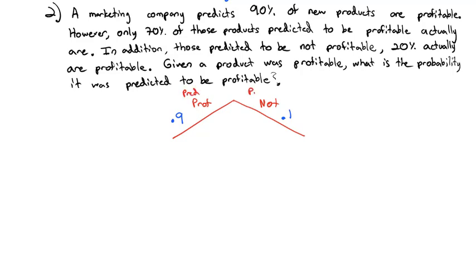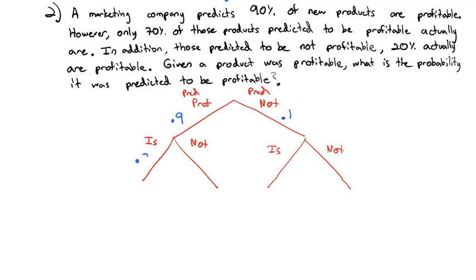The next branch looks at whether the product actually is profitable or not. Of those predicted to be profitable, 70% actually are and 30% are not. Of those predicted to be not profitable, 20% actually are profitable and the remaining 80% are not.